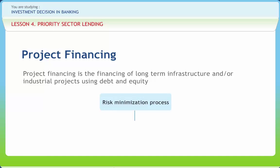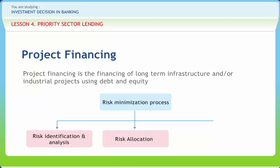Risk minimization process: The minimization of risk involves a three-step process. The first step requires the identification and analysis of all the risks that may bear upon the project. The second step is the allocation of those risks among the parties. The last step involves the creation of mechanisms to manage the risk. The financiers will carefully review the study and may engage independent expert consultants to supplement it. Commercial risk is sought to be allocated to the private sector and political risk to the state sector. Risk must also be managed in order to minimize the possibility of the risk event occurring and to minimize its consequences if it does occur. Risk management is facilitated by imposing reporting obligations on the borrower and controls over project accounts.